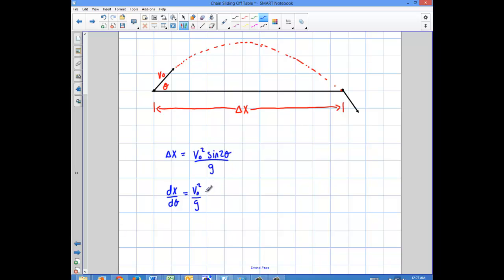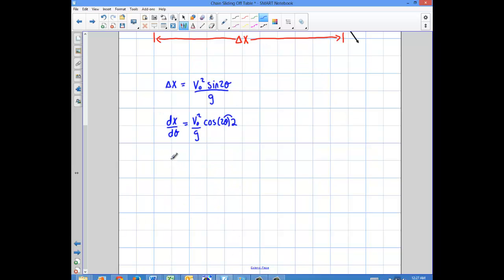And I'm going to take the derivative of sine 2 theta. Derivative of sine is cosine. So cosine 2 theta. And I also have a chain rule here, so I would have to chain that out and say times 2. So my derivative with respect to theta, dx d theta, is going to equal 2 v0 squared over g cosine 2 theta.